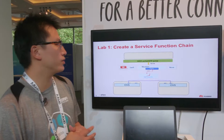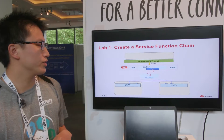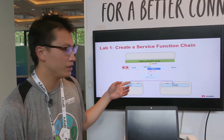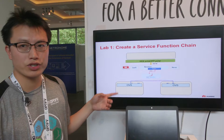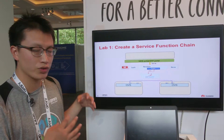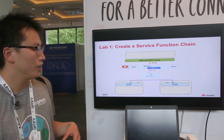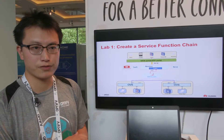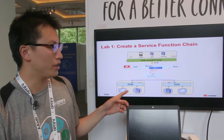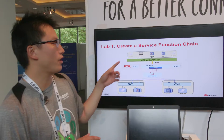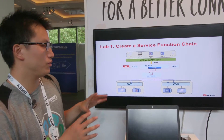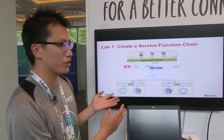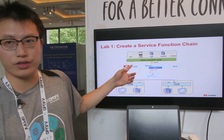Lab one is to create a service function chain. Here is OpenStack and here is the ONOS controller, communicating via the Neutron plugins. In the data plane, there are two compute nodes, each with one Open vSwitch, and the nodes are connected by a VXLAN tunnel. When the user creates two virtual hosts and two service functions — firewall and DPI — after configuring the traffic between the two hosts to go through the function chain, the result is visible from the user side.